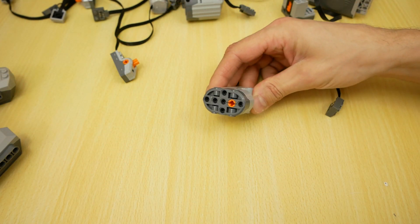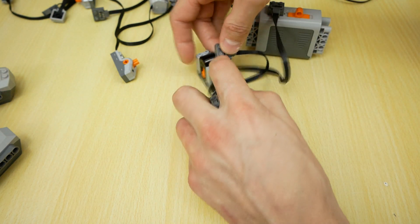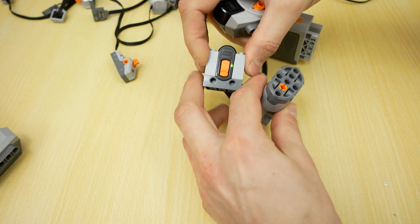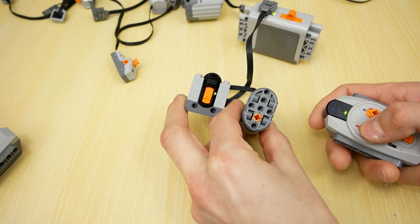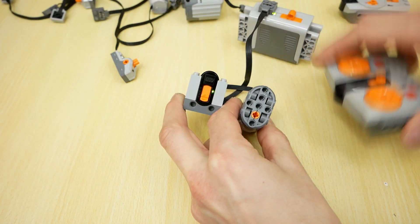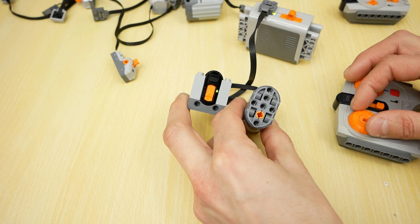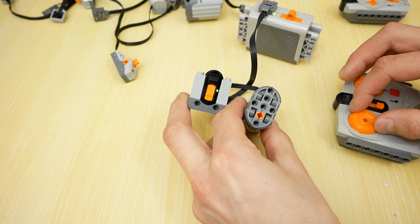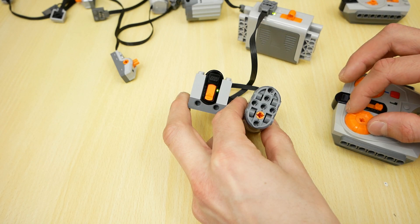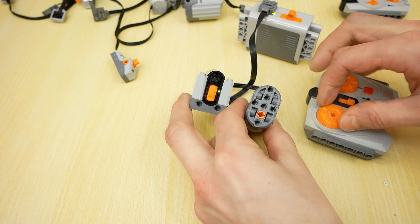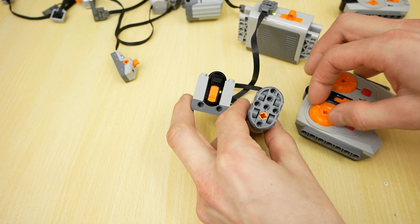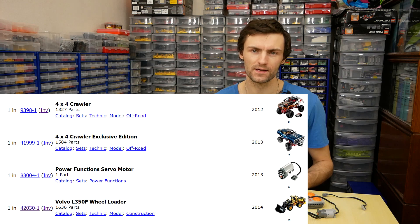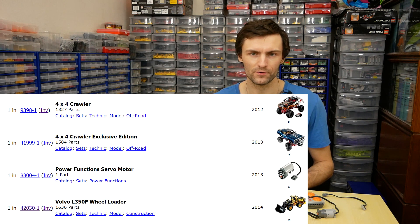The servo motor was designed special for steering. Its working range is 90 degrees to each side. I'll show you with infrared receiver. And also, it has small regulation. And also, it has small gear. With this unit I can't rotate to the opposite direction. These motors can be found only in three sets: two off-roaders and Volvo Front Loader 42030.